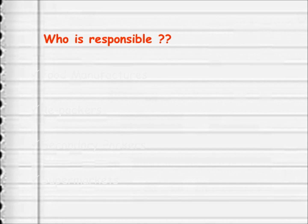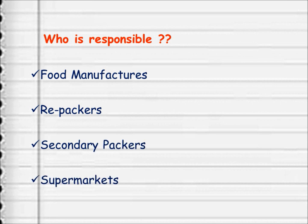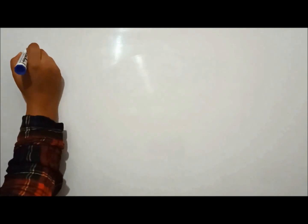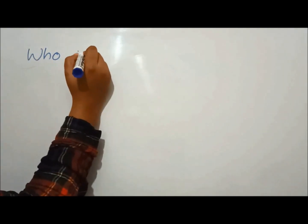The next important point is: who is responsible for determining the shelf life? This includes food manufacturers, repackers, secondary packers, and supermarkets. Everyone in this food production chain has an influence on food quality and safety.